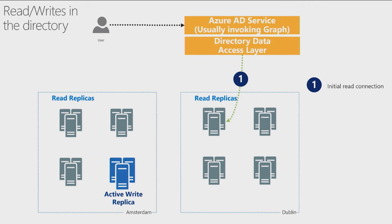The system will guarantee that we find the nearest replica that can serve the customer's requests, and we have read replicas all over. In our example, we have a user in the UK, and the system deemed that the nearest data center to serve this user's request is one of the two data centers in Dublin. One of the replicas with sufficient load capacity has been assigned to serve the request. The primary write replica in this case is in Amsterdam — not in Dublin.